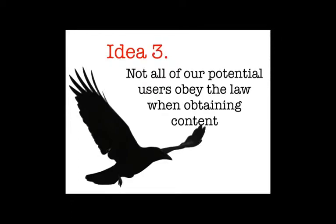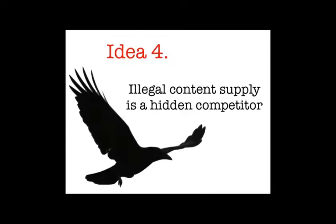Idea three: not all of our potential users obey the law when obtaining content. We need to know about those information sources because illegal content supply is actually a hidden competitor for libraries. If a councillor sees teenage kids downloading the latest Harry Potter e-books and doesn't know where they're getting them from, arguing 'we need to provide your children with Harry Potter e-books, give us some money for Overdrive' won't be compelling. If people feel the need is being met even illegally, we need to understand this is a competitor — there's a perception that maybe our legal model is not as good as the illegal model they can use.